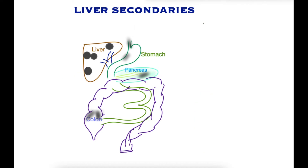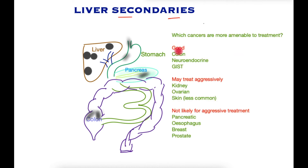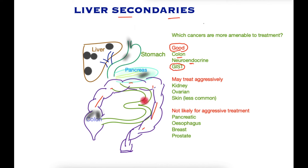Not all liver secondaries are equal in terms of our ability to treat them effectively. Those with a good record of treatment include cancers of the colon, tumors termed neuroendocrine, and gastrointestinal stromal tumors called GIST which arise anywhere within the GI tract. When these metastasize to the liver, aggressive treatment options including surgery may be considered.